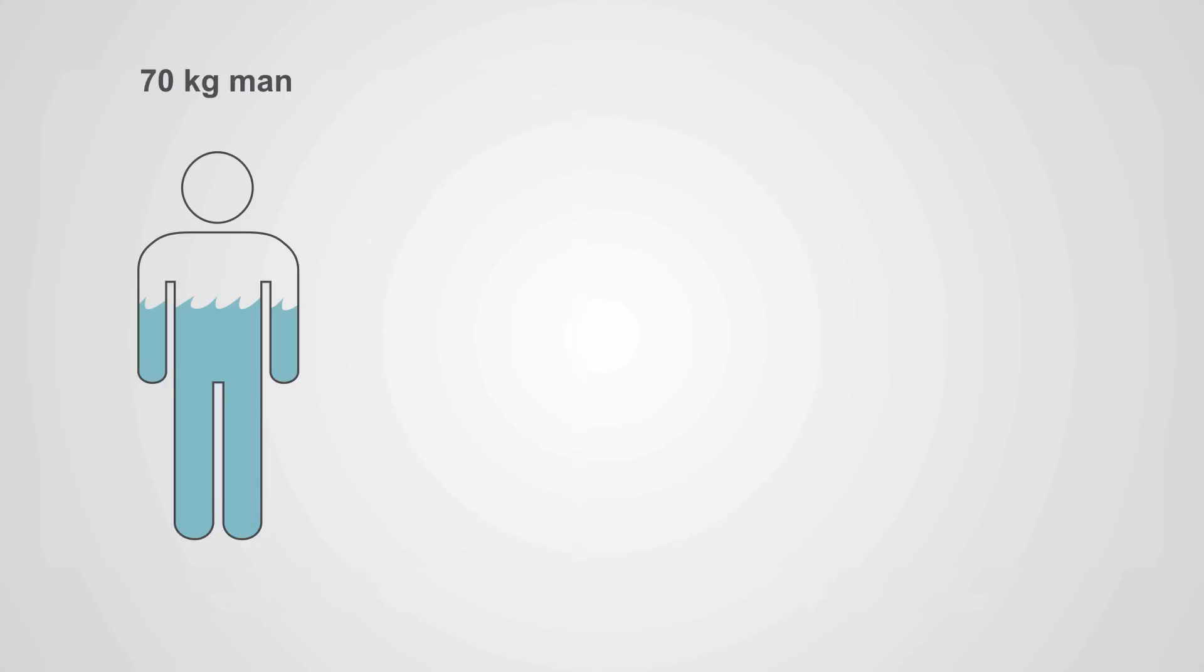Let's take an example of a lean 70-kilogram man. How much water does he have? 70 kilograms times 0.6 results in total body water of 42 liters.